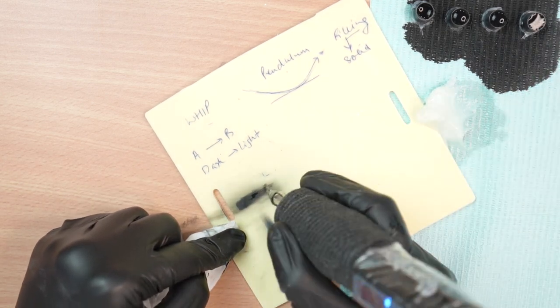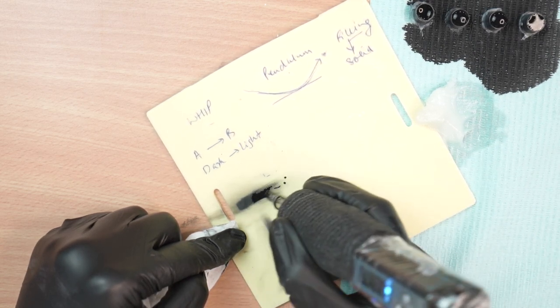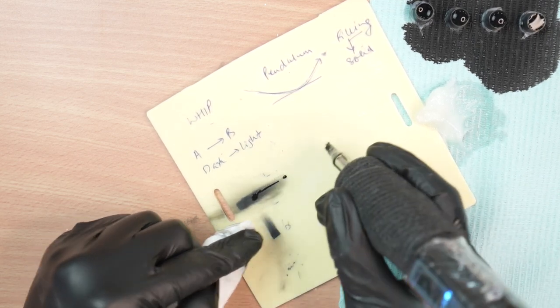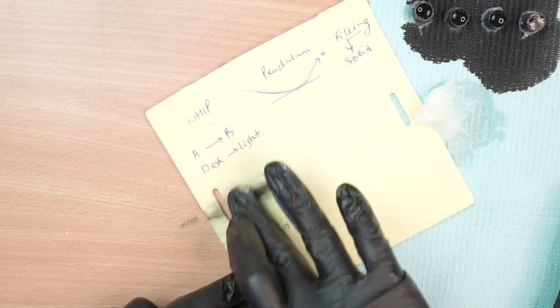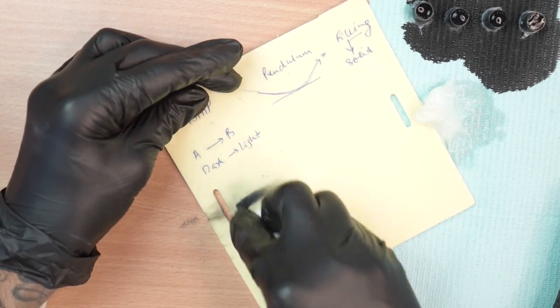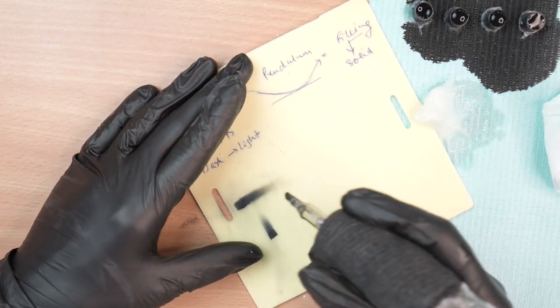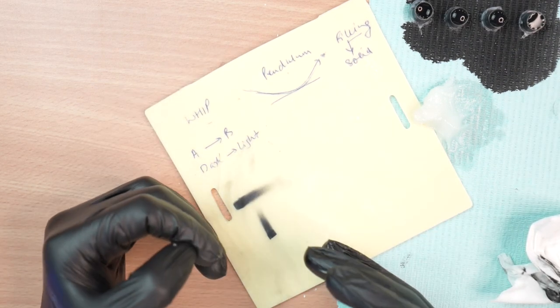And then you can even take a light tone and extend it. So as you can see, the whip shading is a directional shading.